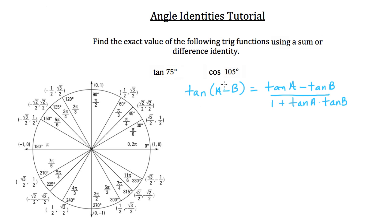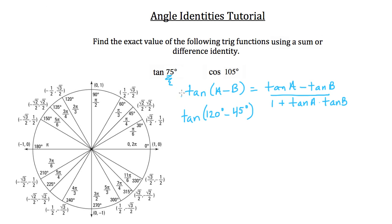The tangent difference identity states: tangent of (A minus B) equals (tangent A minus tangent B) all over (1 plus tangent A times tangent B). We want two angles whose difference is 75 degrees. I'll use 120 degrees minus 45 degrees, which equals 75 degrees. So angle A is 120 degrees and angle B is 45 degrees. When solving sum or difference identity problems, find two angles that either add to or subtract to give the target angle.